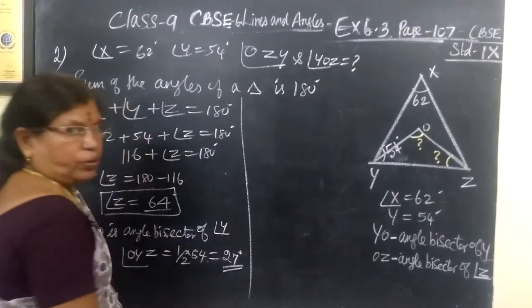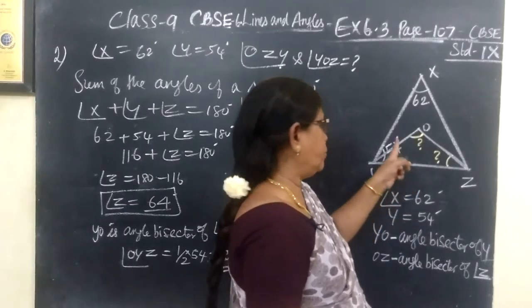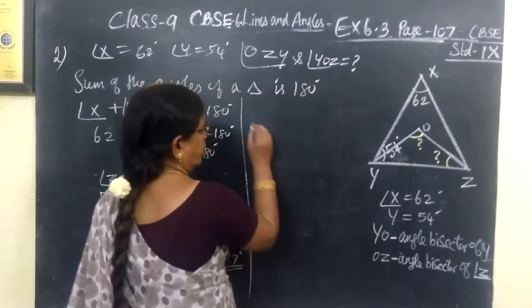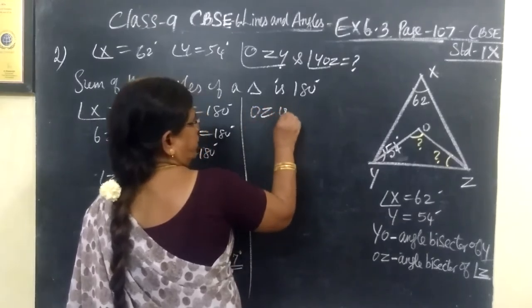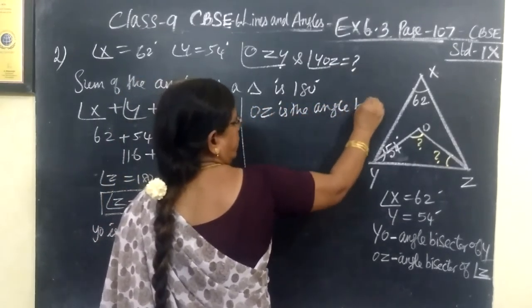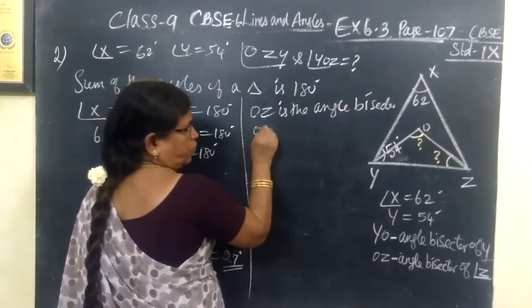Since it is angle bisector, we know 54 is equally shared. So, it is 27 and this is also 27. And here also, YZ is the angle bisector.